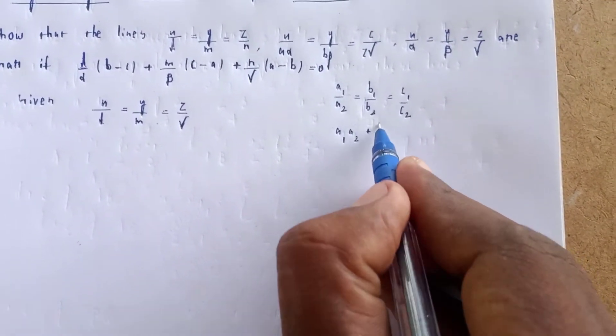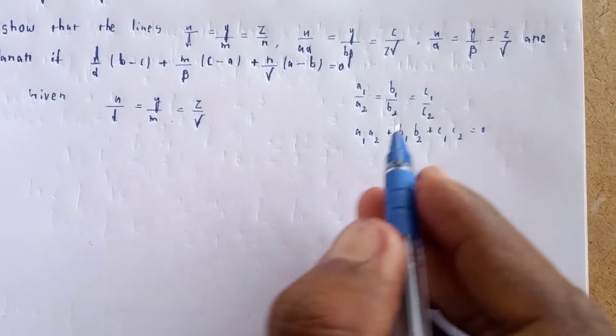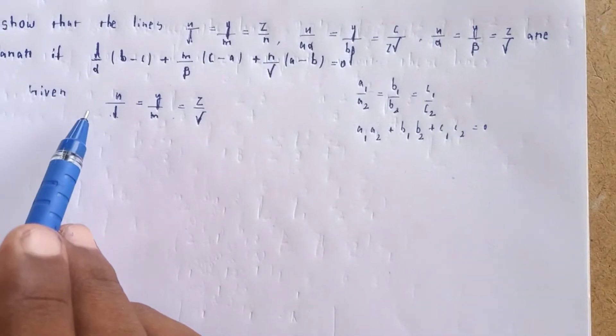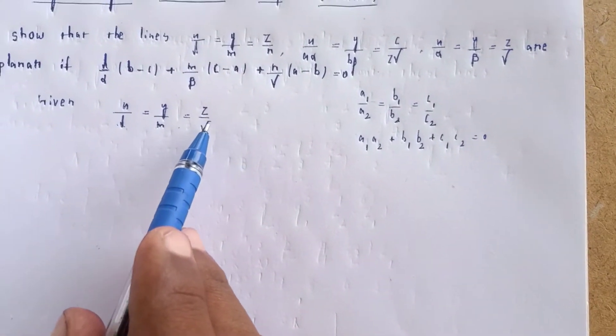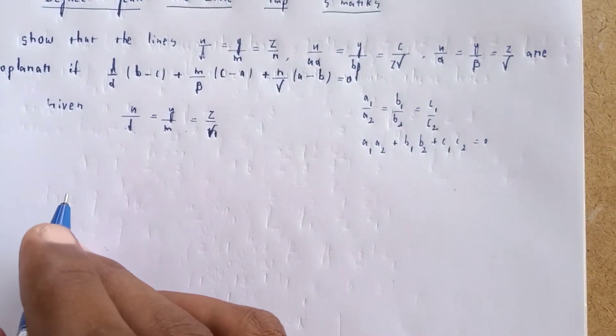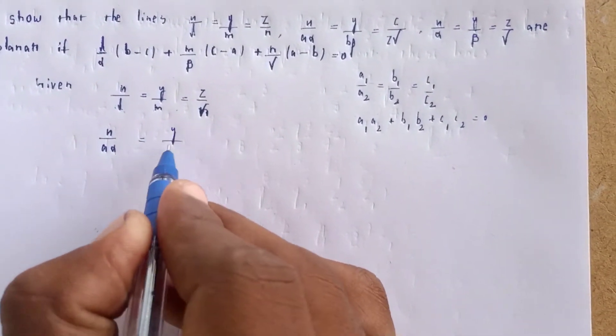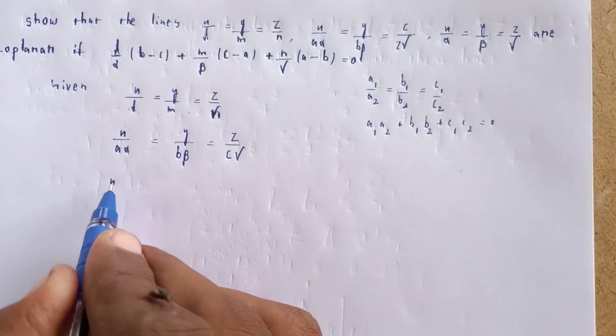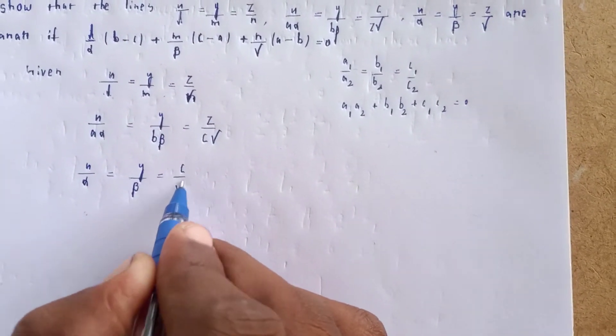The perpendicular lines condition is a1·a2 + b1·b2 + c1·c2 = 0. We have x/α = y/β = z/γ for the first line and x/α = y/β = z/γ for the third line as well.